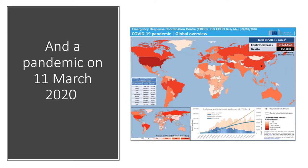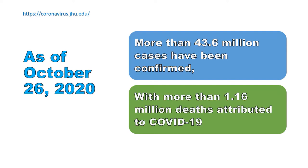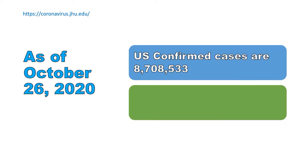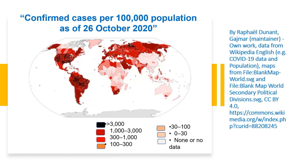The WHO declared COVID-19 a pandemic on the 11th of March 2020. As of October 26, 2020, more than 43.6 million cases have been confirmed, with more than 1.16 million deaths attributed to COVID-19. U.S. confirmed cases exceeded 8 million, and U.S. deaths exceeded 225,000.